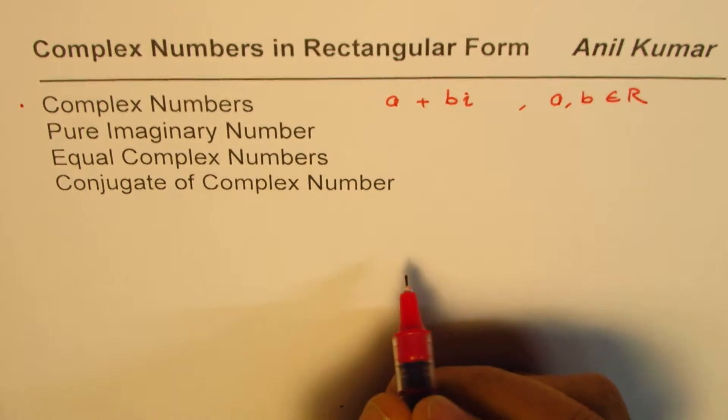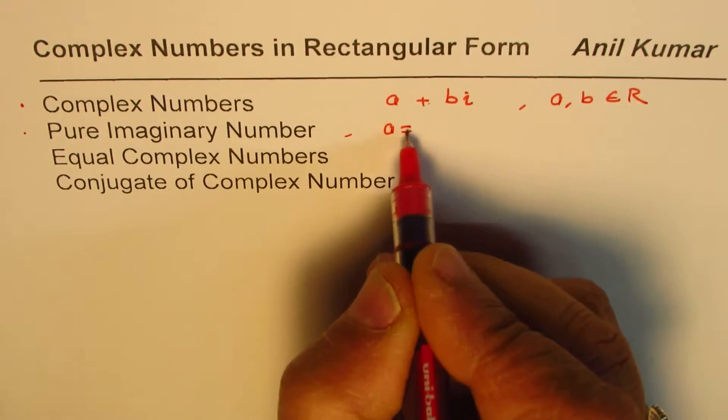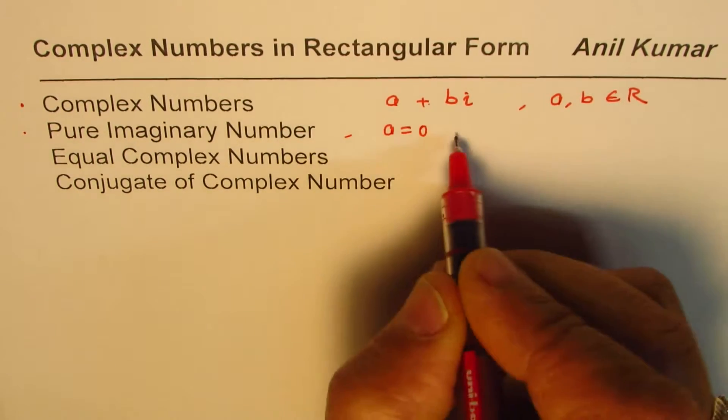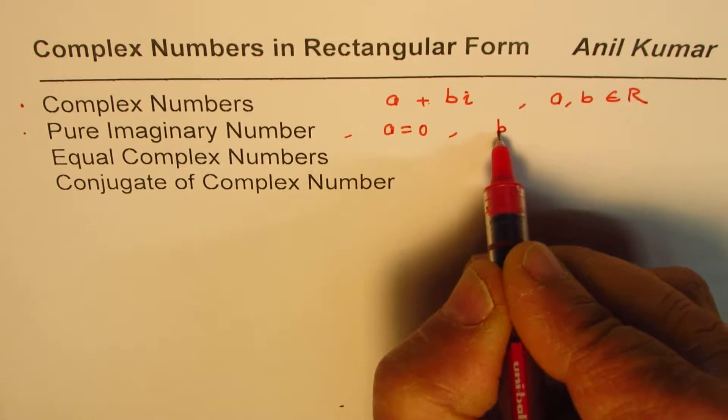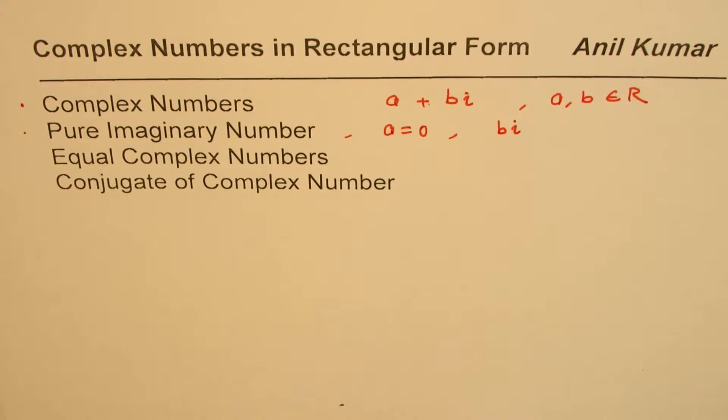Pure imaginary numbers are those where a is equal to zero, so we get the complex number in the form of bi. Equal complex numbers means that the real parts are equal and the imaginary parts are equal.